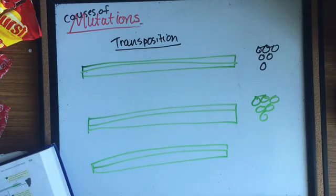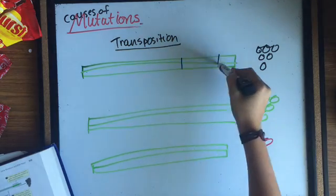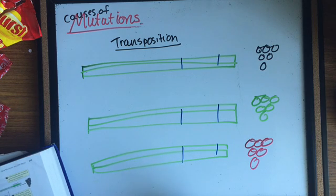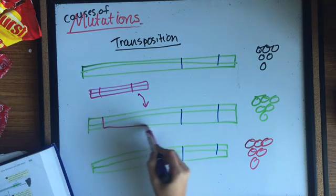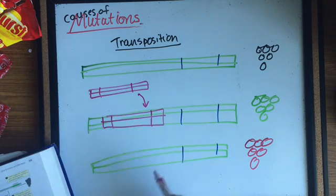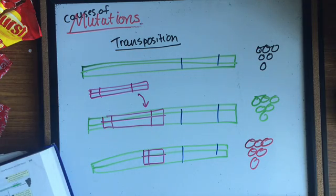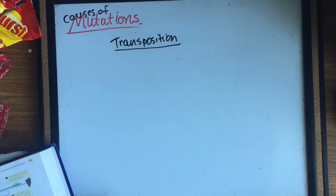But in white grapes, a retrotransposon has inserted near that same gene and disrupts the synthesis of anthocyanines. And in red grapes, a second mutation has removed most of the retrotransposon, but a piece is left behind and anthocyanine production is partly restored.